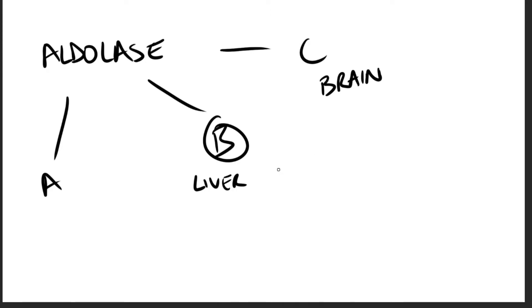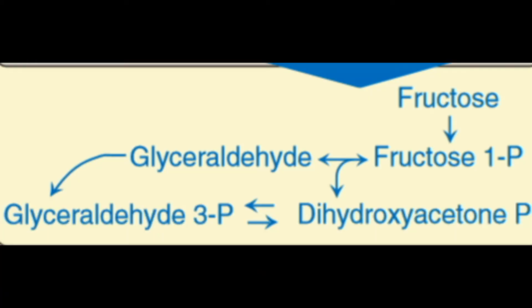This aldolase B is also called fructose 1-phosphate aldolase, and it converts fructose 1-phosphate to dihydroxyacetone phosphate and glyceraldehyde. Only aldolase B will cleave fructose 1-phosphate into these two products, which can directly enter glycolysis or gluconeogenesis.